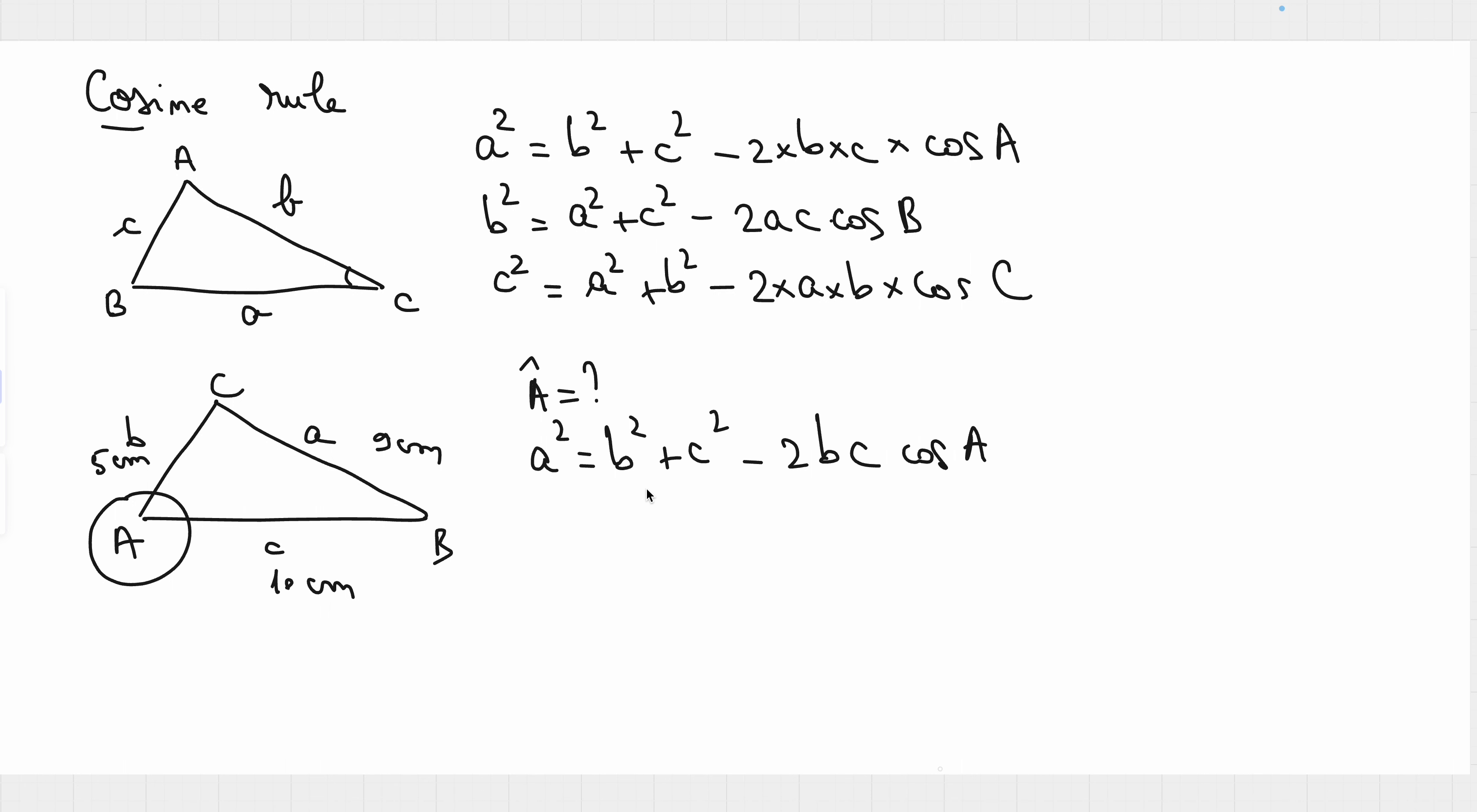And we replace in the equation, or maybe I think it's faster to find cosine of the angle A. Okay, let's do that. So, 2 times b times c cosine of A equals b squared plus c squared minus a squared. And cosine of A would be b squared plus c squared minus a squared divided by 2 times b times c. And now we should replace with the values.